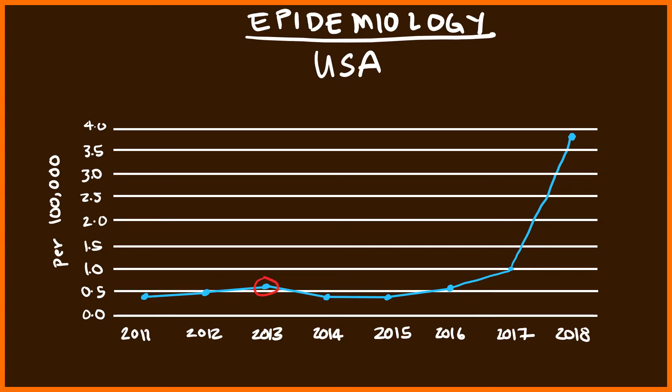It turns out there were several pomegranates imported from Turkey that had Hepatitis A virus particles, and that's what led to a localized outbreak. However, soon after, the rate of Hepatitis A virus went back to 0.5 in 2014 and 2015.